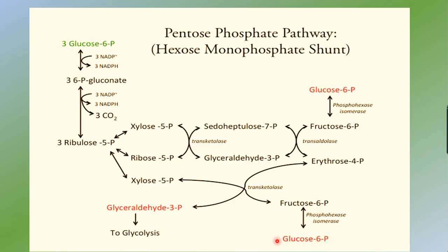In summary, glucose-6-phosphate is converted to 6-phosphogluconate, which gives rise to ribulose-5-phosphate. In the presence of epimerase and isomerase, ribulose-5-phosphate forms xylulose-5-phosphate and ribose-5-phosphate. These combine via transketolase to give 7-carbon and 3-carbon compounds; transaldolase then produces 6-carbon and 4-carbon compounds. Fructose-6-phosphate enters glycolysis to regenerate glucose-6-phosphate. Erythrose-4-phosphate combines with xylulose-5-phosphate to produce fructose-6-phosphate and glyceraldehyde-3-phosphate, which also enter glycolysis, completing the breakdown of glucose. This is all about the HMP pathway.